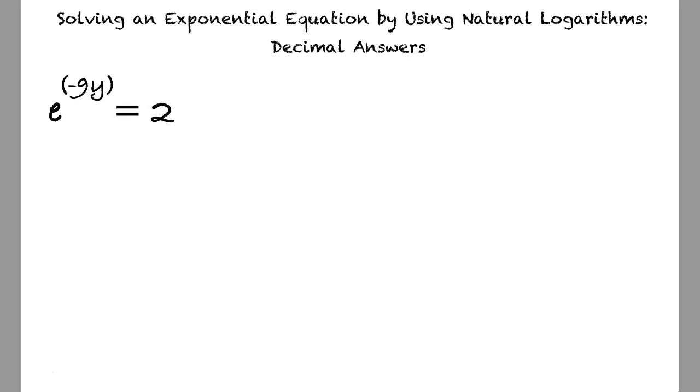e raised to the negative 9y power equals 2, where we are asked to round to the nearest hundredth. How do we solve this equation by isolating the variable if the variable is part of the exponent? Good question.